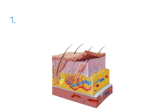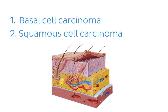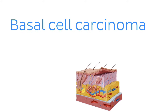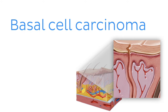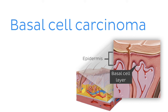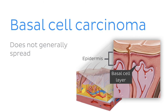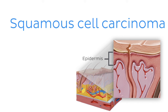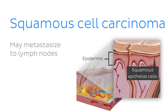To finish, two important terms relating to skin cancer: basal cell carcinoma is a malignant tumor of the basal cell layer of the epidermis — the most common type of skin cancer, slow-growing, and generally does not spread. Squamous cell carcinoma, on the other hand, is a malignant tumor of the squamous epithelial cells of the epidermis, and may metastasize to lymph nodes.